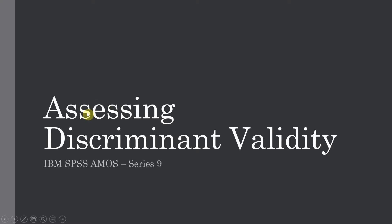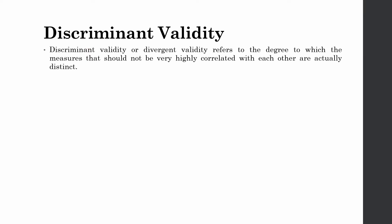In this session we are going to focus on Discriminant Validity using IBM SPSS AMOS. What is discriminant validity? Once you have assessed the composite reliability and convergent validity, as we have done in the last session, the next step is assessing discriminant validity. Discriminant validity, or divergent validity, refers to the degree to which measures that should not be highly correlated with each other are actually distinct or not very highly correlated with each other.